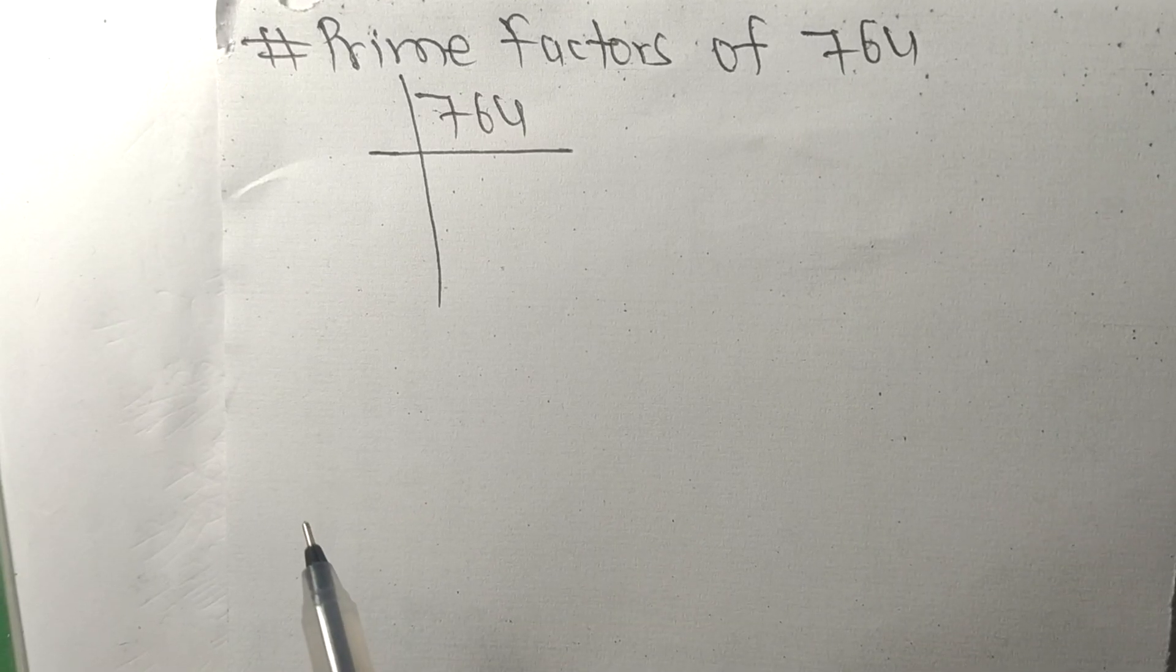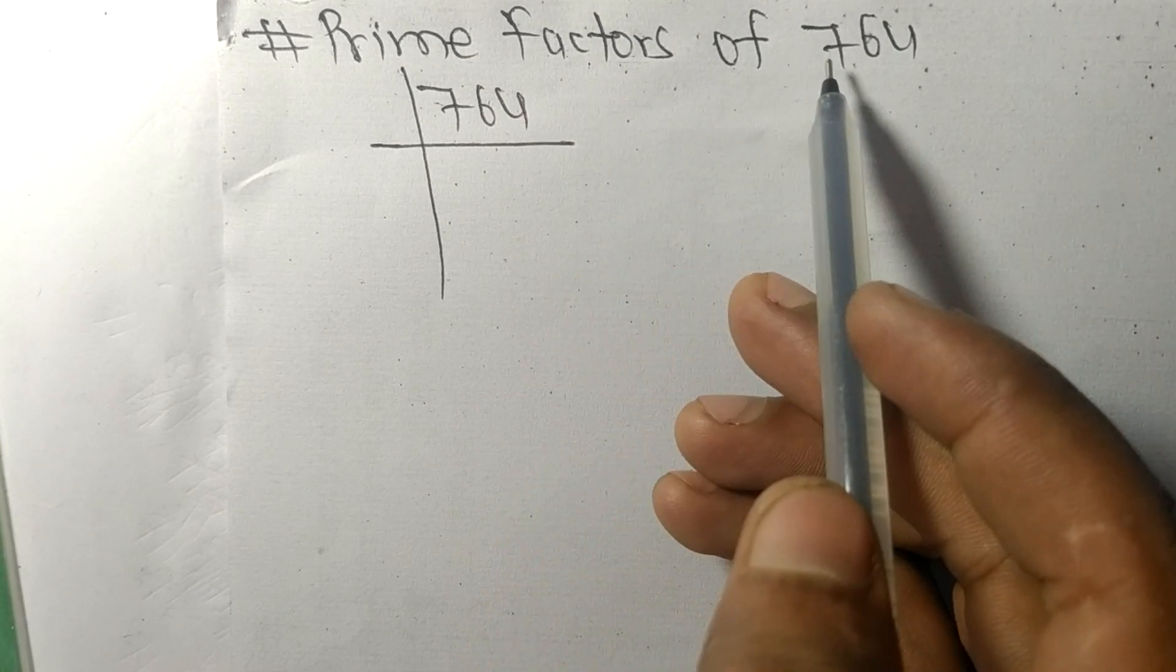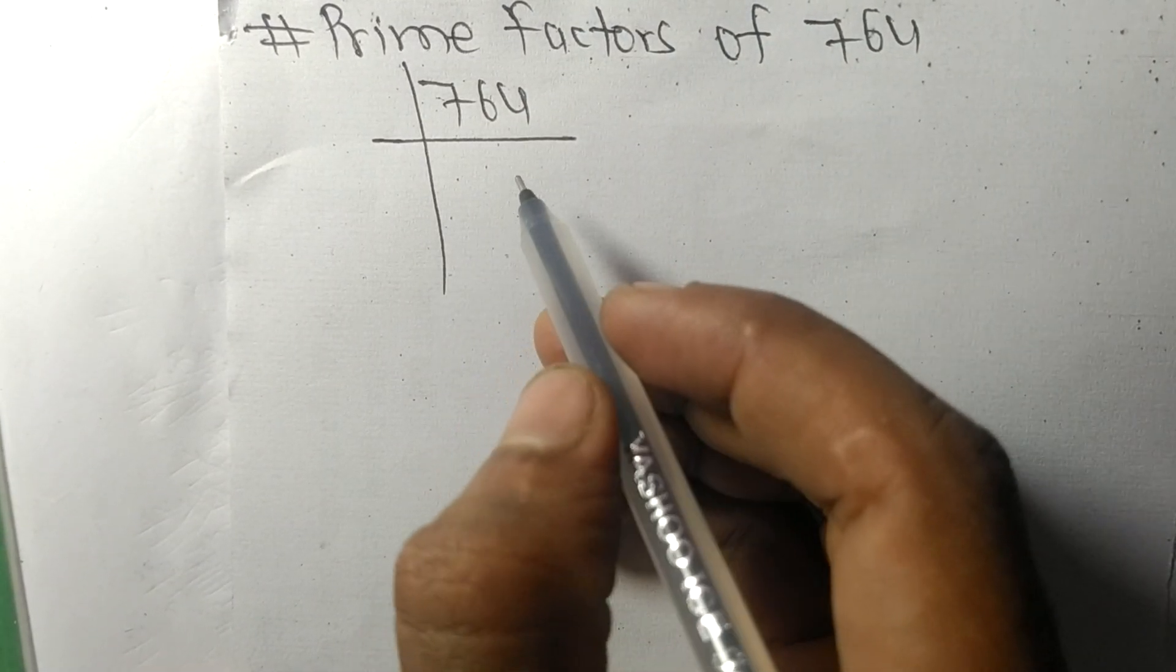Today in this video we shall learn to find the prime factors of 764. At last it contains even number 4, so the whole number is divisible by 2.